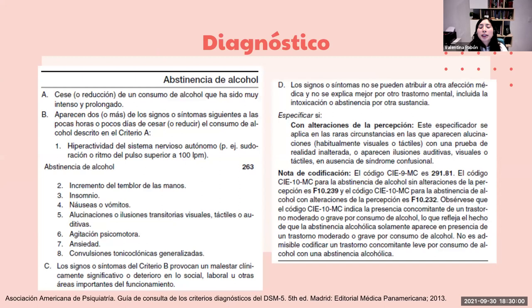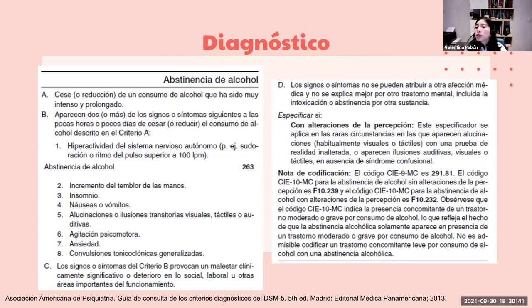Los criterios del DSM-5 para diagnóstico de síndrome de abstinencia por alcohol requieren: cese o reducción de consumo intenso y prolongado, con dos o más de los siguientes signos o síntomas a las pocas horas o días: hiperactividad del sistema nervioso autónomo (sudoración, taquicardia), incremento del temblor de manos, insomnio, náuseas o vómitos, alucinaciones o ilusiones transitorias visuales, táctiles o auditivas, agitación psicomotora, ansiedad o convulsiones tónico-clónicas generalizadas. El criterio C exige que los síntomas provoquen malestar clínicamente significativo o deterioro social o laboral. El criterio D establece que no puedan atribuirse a otra afección médica, incluida intoxicación o abstinencia por otras sustancias.